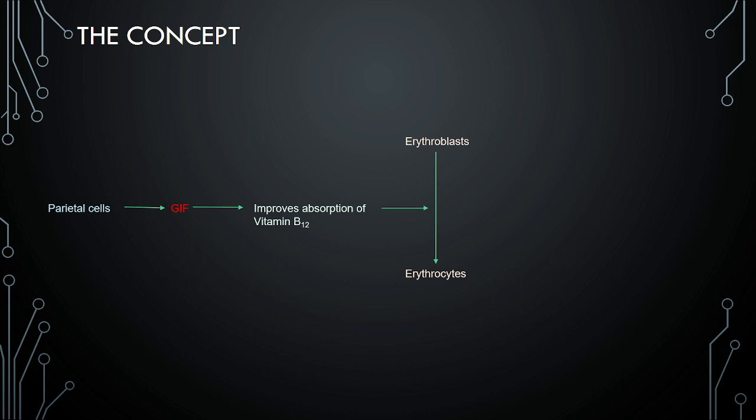Let's look at the concept. This is started from parietal cells. Parietal cells create something called GIF. That's not the same GIF we are used to. But this GIF is gastric intrinsic factor. That means it's a simple sort of intrinsic factor, and gastric is secreted from the gastric cells. So it's called gastric intrinsic factor.